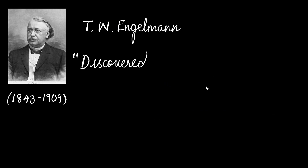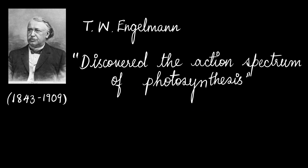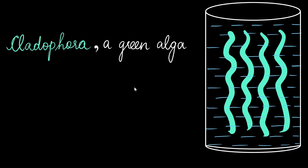The next scientist is T.W. Engelmann. He was the first person to discover the action spectrum of photosynthesis. Action spectrum is a graph that shows the rate of a biological process as it varies with the wavelength of light. For his experiment, Engelmann used a large glass beaker filled with water and placed a cladophora — a green algae — inside it. This setup was placed in sunlight.